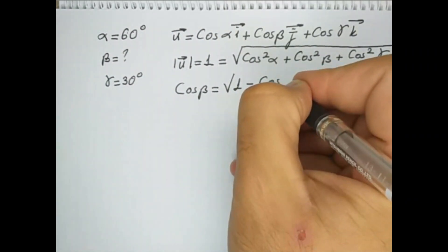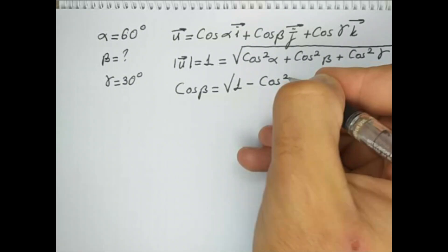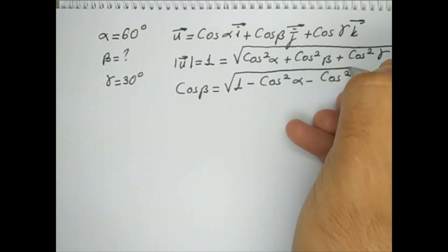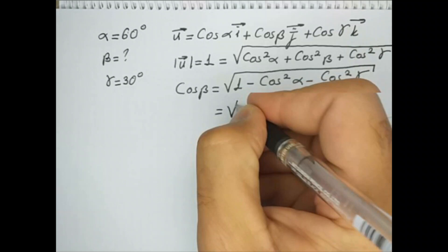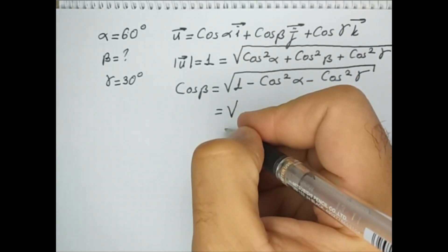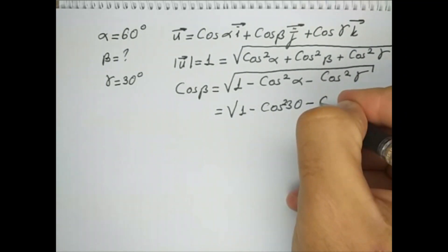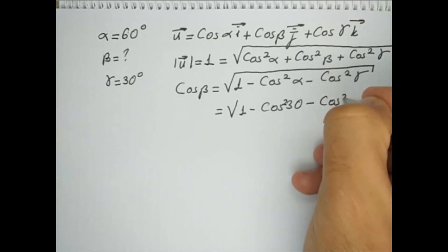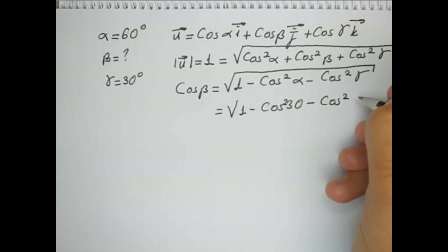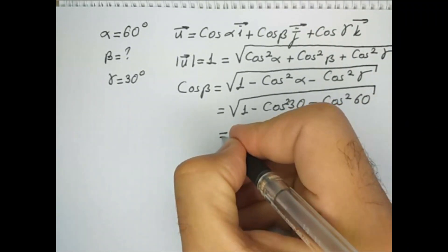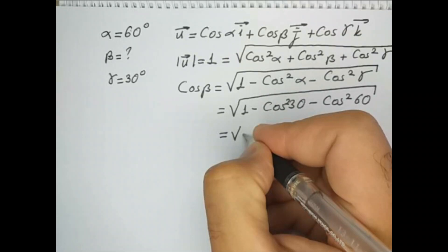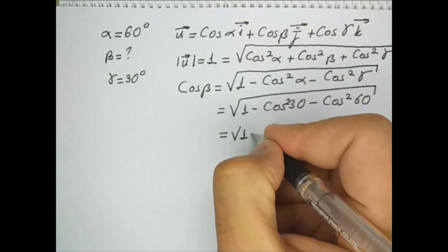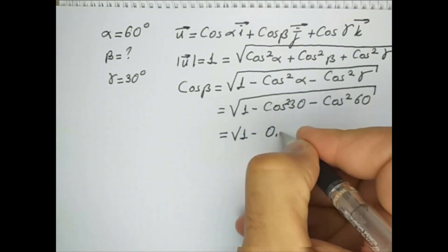Now let's put the values into their places. Alpha is 60 degrees, so this is minus cosine 30, of course the square of it, minus cosine square 60. This certainly gives us 1 minus 0.866 minus 0.5, of course the square of these ones.